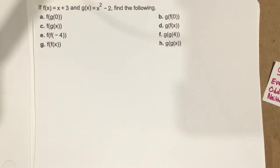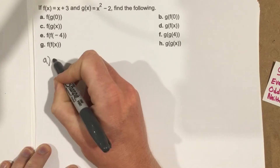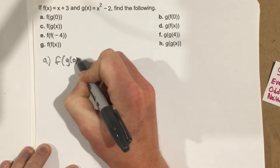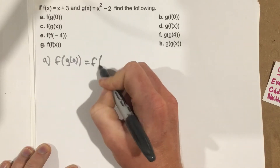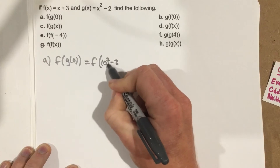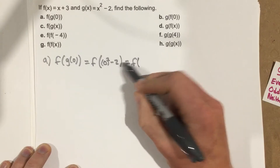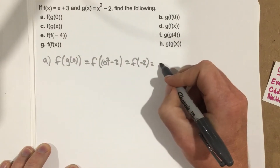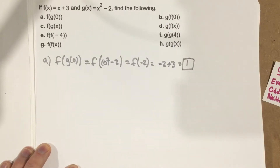First, we start with part a: f of g of 0. We take 0 and plug it into the g function. So I get f of g(0), which is 0 squared minus 2, giving f of negative 2. Then I plug negative 2 into f: negative 2 plus 3, which is 1. So part a is 1.